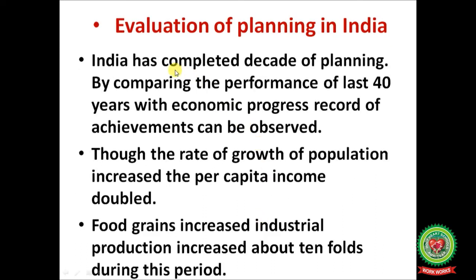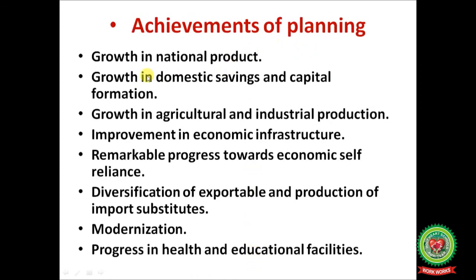Evaluation of planning in India: India completed decades of planning. Comparing the performance of the last 40 years with economic progress, a record of achievements can be observed. Though the rate of growth of population increased, per capita income doubled. Food grain production increased and industrial production increased about 10-fold during this period. Achievements of planning include: growth in national product, growth in domestic savings by households, and capital formation — meaning infrastructure, new colonies, hospitals, and schools.